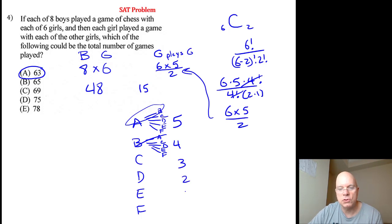If you continue this, you'll see there's three, then two, then one, and zero. Because by the time we get to F, you'll just have F playing E, but E already plays F. So 5 plus 4 plus 3 plus 2 plus 1 is also 15. So we got 48 matches when the boys play the girls plus 15 matches when the girls play each other: 48 plus 15 equals 63.